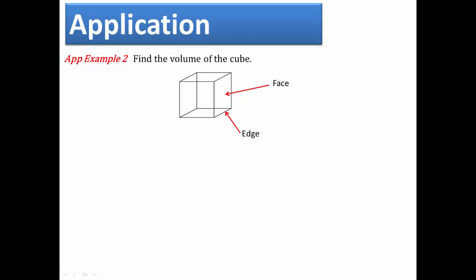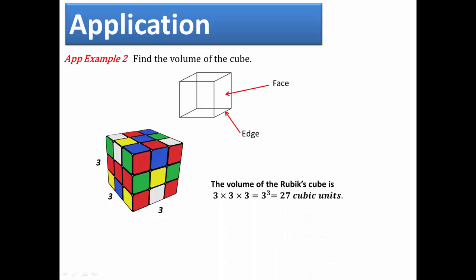For our example, we will consider Rubik's cube in which the side edges are all 3 units in length. To find the volume of Rubik's cube, we multiply 3 times 3 times 3.